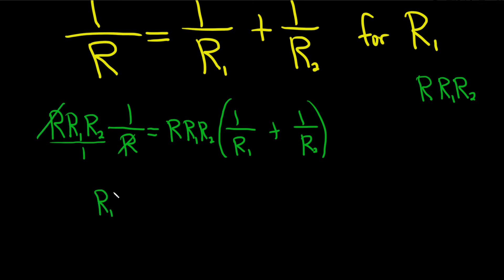So we have R1, R2 equals, and now we're going to take this and multiply it by this. You could skip steps, but I'll show it. So it's R, R1, R2 times 1 over R1. And then plus, and then do the same thing here. It'll be R, R1, R2 times 1 over R2.